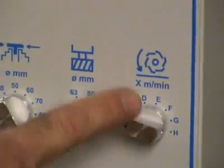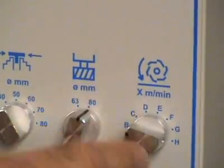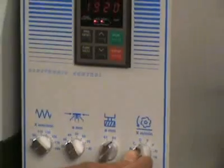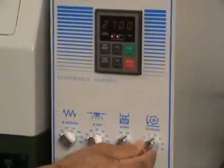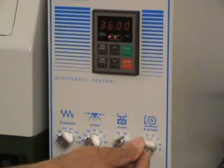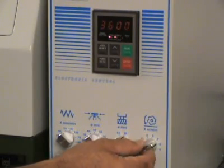The far right switch sets the cutting speed in steps up to a maximum cutting head rotation of 3600 RPM. Here the display shows the rotation speed.